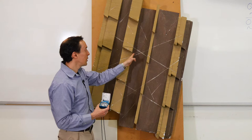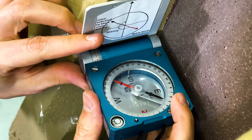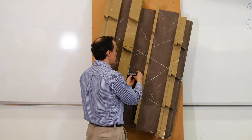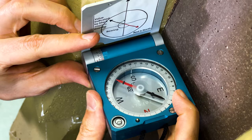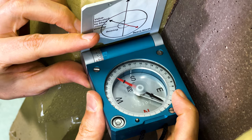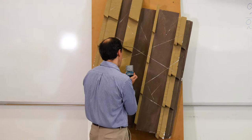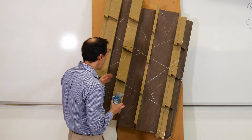Next I'm going to measure dip and dip direction of this bedding plane. I'm going to press the compass against the surface and adjust it so that the bubble is right in the circle — so I will level it. In this case I'm going to find the normal to the bedding plane. Then I will release the needle and it gives me a dip direction of 50 degrees and a dip angle of about 78 degrees.